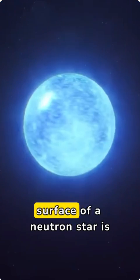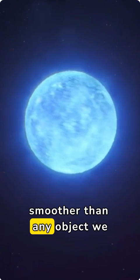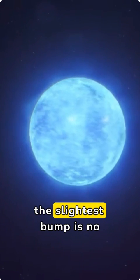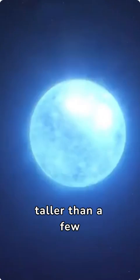Interestingly, the surface of a neutron star is smoother than any object we know. Even the slightest bump is no taller than a few millimeters.